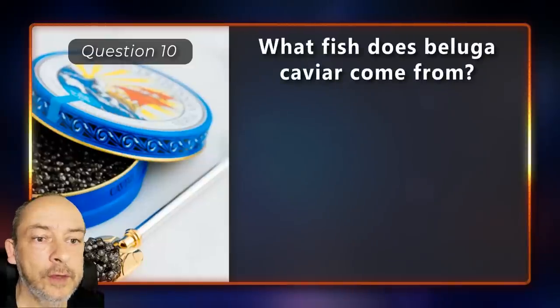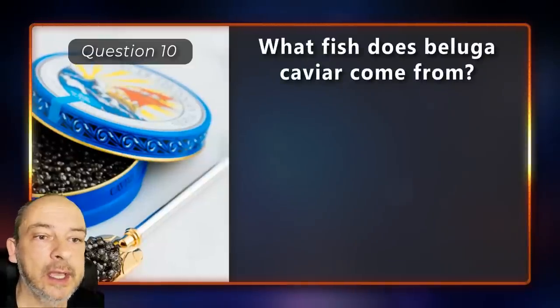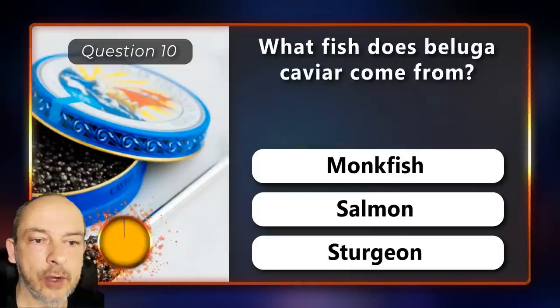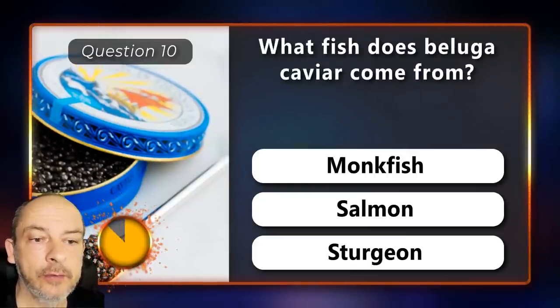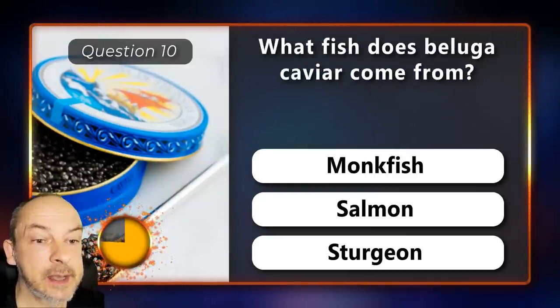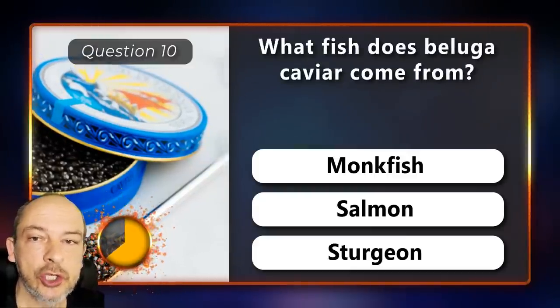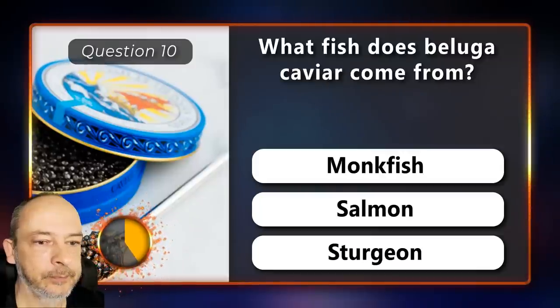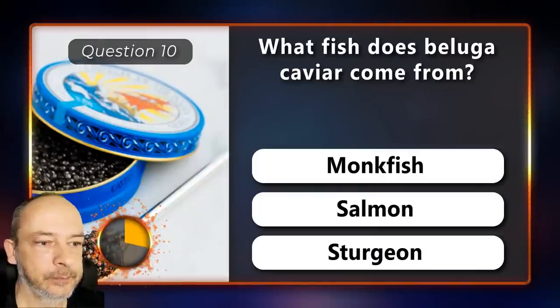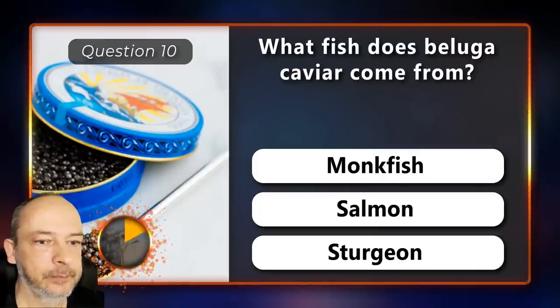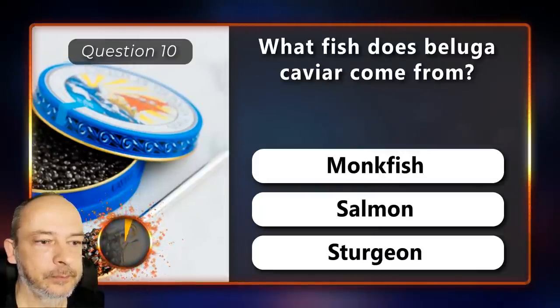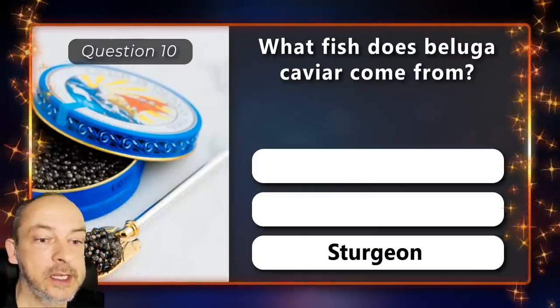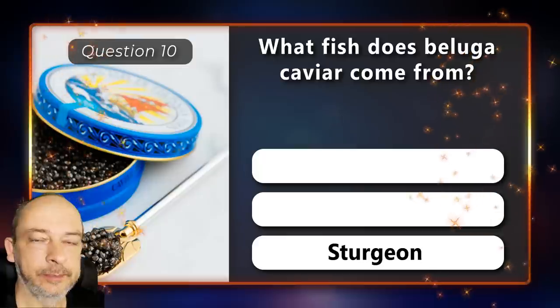What fish does beluga caviar come from — the monkfish, salmon, or sturgeon? And the answer is sturgeon.